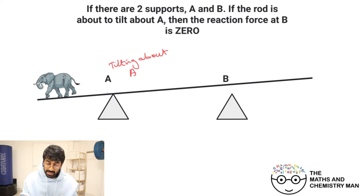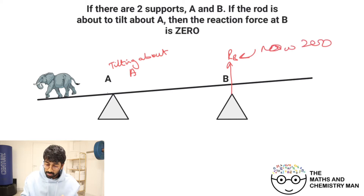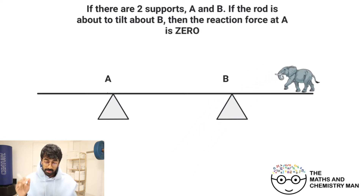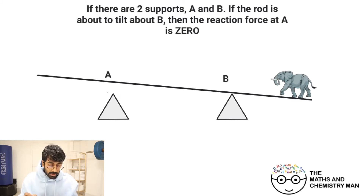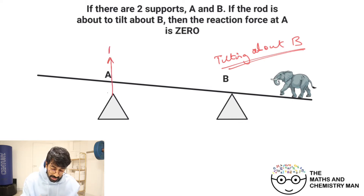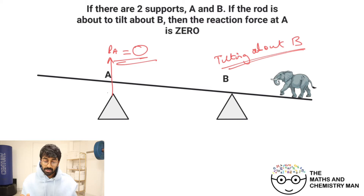When tilting about A, the reaction force RB is now zero. In a similar scenario with the same two supports, if we take the elephant and put him on the other end of the beam, he's going to tip it downwards and we end up tilting about B. When tilting about B, the reaction force at A is equal to zero.